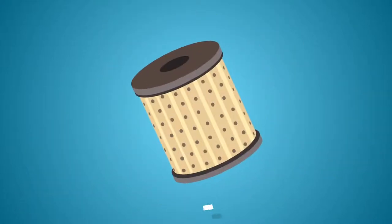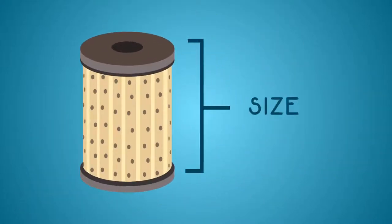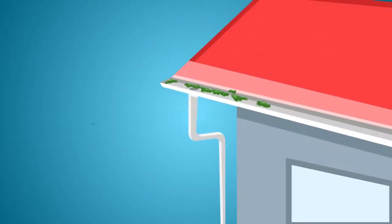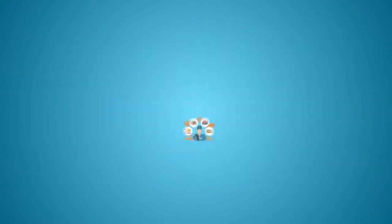For example, when was the last time you changed your air filter? And what size do you even need to order? When should you get your rain gutters cleaned? And when was the last time you had your air conditioner or heater serviced to prevent them from breaking?